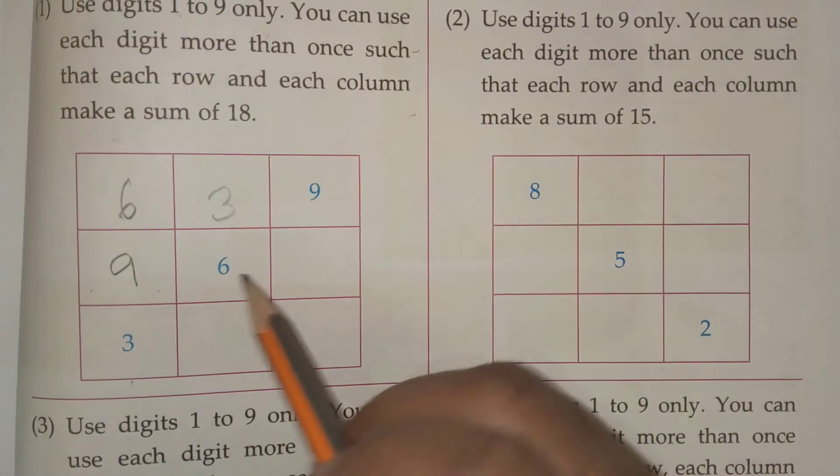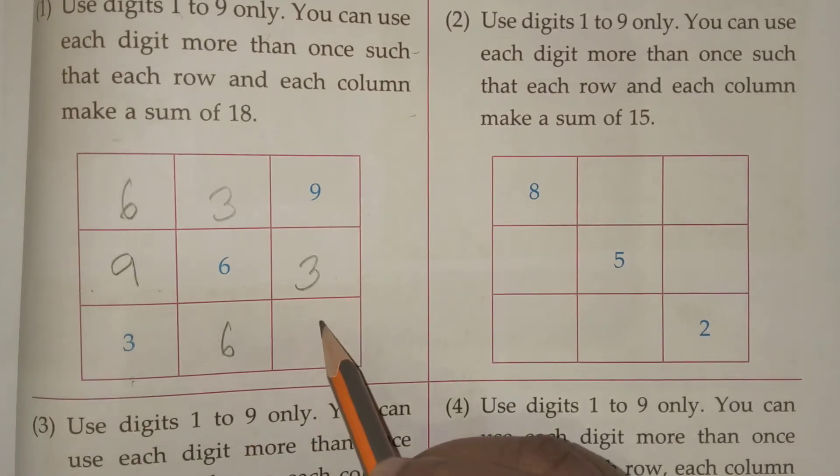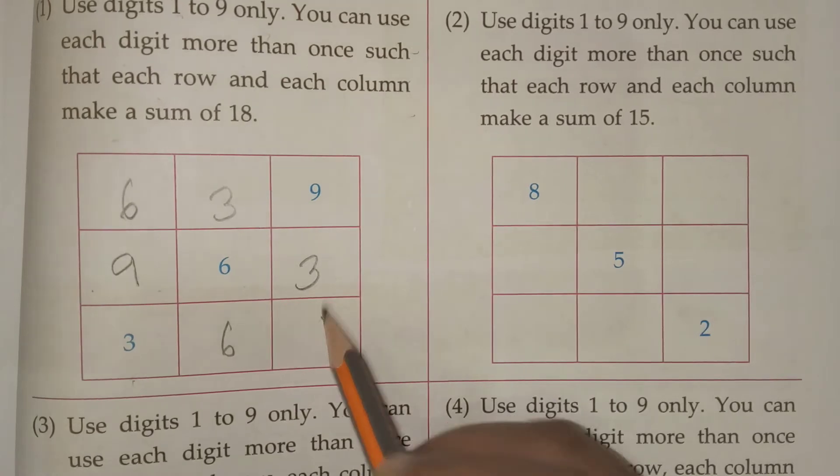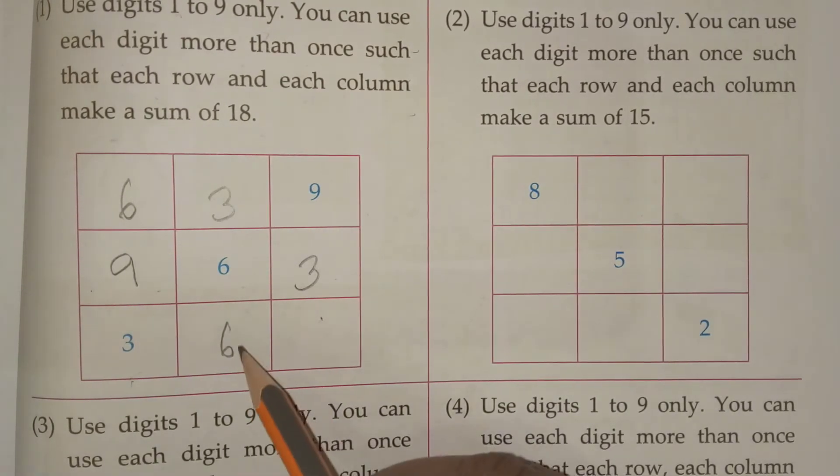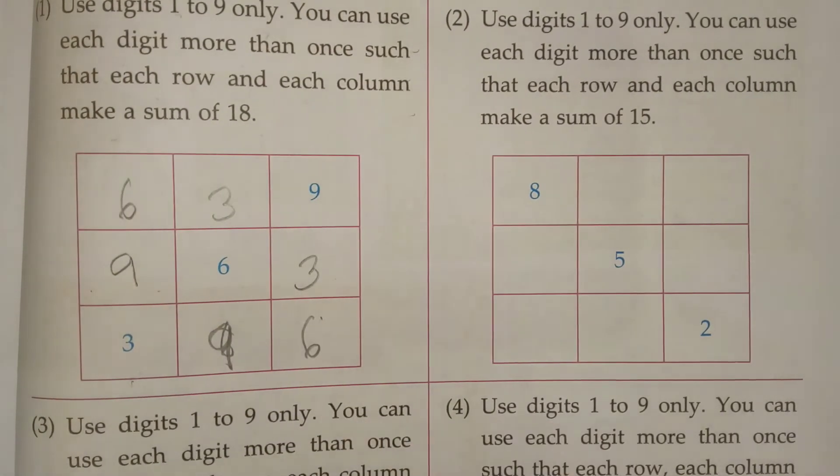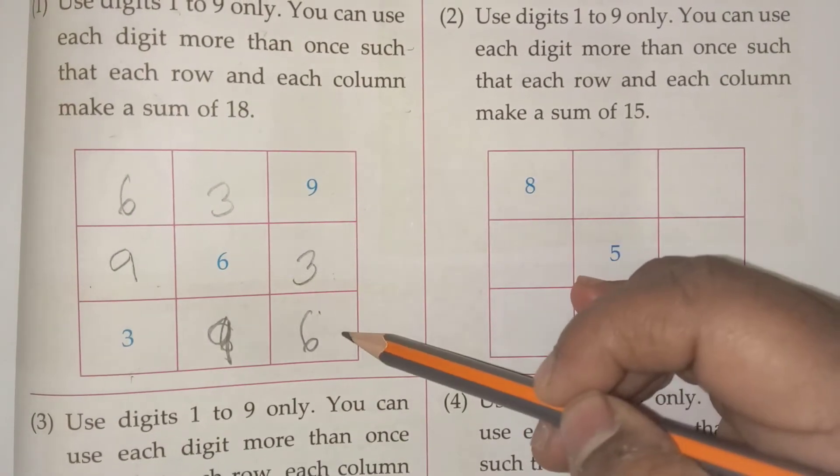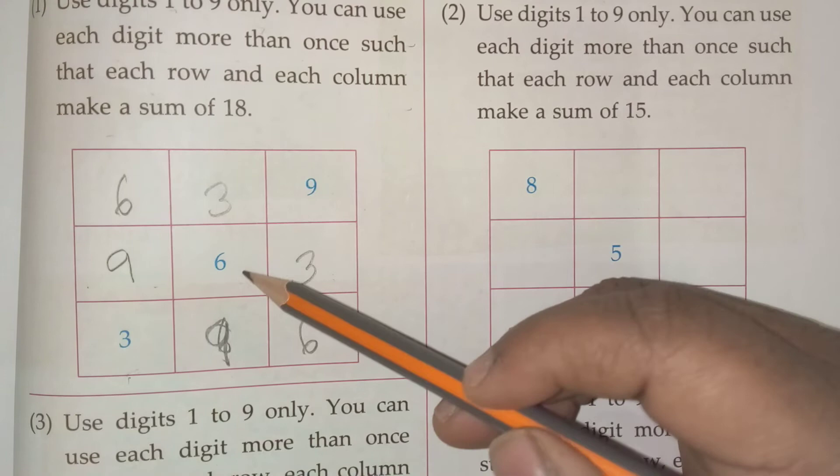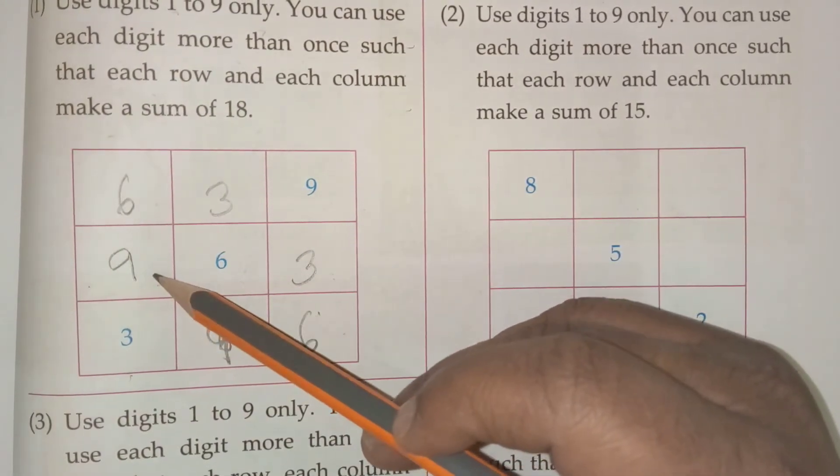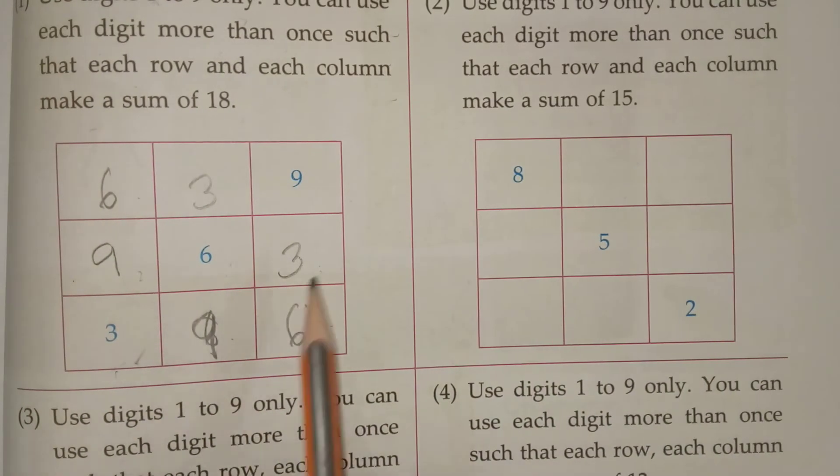9, 6, 3. 3, 6, 9. But here it will not come. So here what I should do? Here I should use 9 and here I should use 6. Now see 9 plus 3, 12. 12 plus 6, 18. 3 plus 6, 9. 9 plus 9, 18. 6 plus 9, 15. 15 plus 3, 18. See like this you should count.